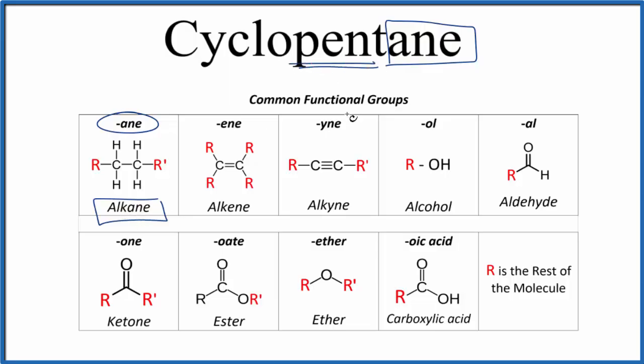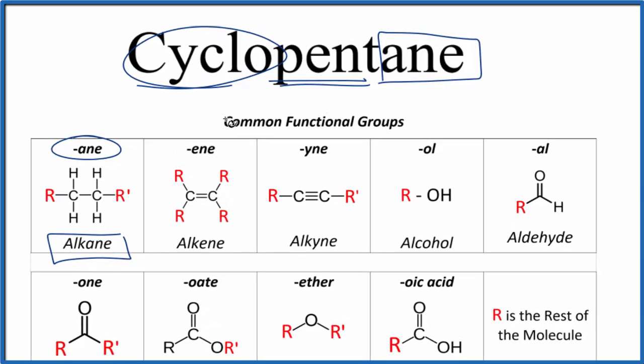Pent means five. Five carbons, all carbons and hydrogens single bonded. And finally, cyclo means that we're going to have a ring. So let's draw a ring with five carbons, single bonded, surrounded by hydrogens.